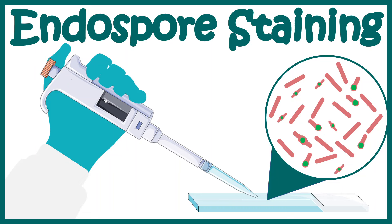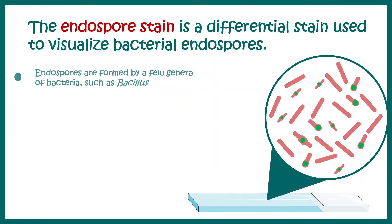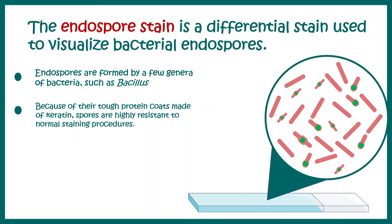In this short video we'll talk about endospore staining. Many bacteria, especially those of the Bacillus genus, form endospores in harsh environments. Endospores are resistant to heat and harsh environmental conditions and can survive for very long periods. This endospore staining method determines which bacteria form endospores.